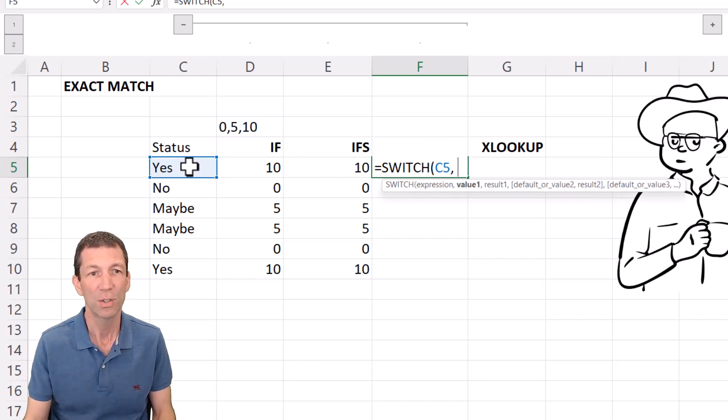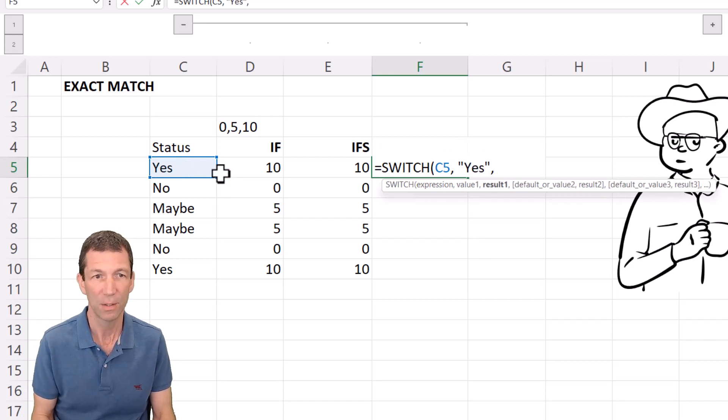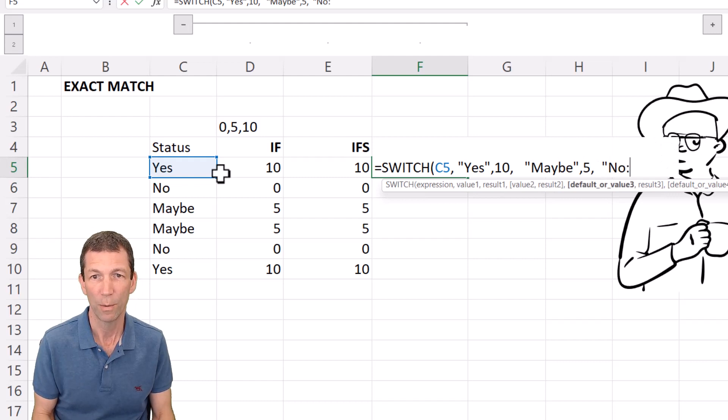Okay so where it's yes the answer is 10, where it's maybe the answer is 5 and when it's no the answer is 0.